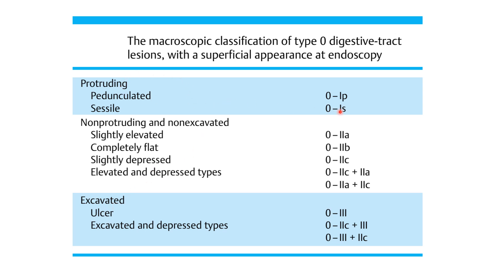The protruding lesions are of two types. The non-protruding, non-excavated category includes three types, with lesions that can take characteristics of more than one. Type 3 is actually a deep ulcer.